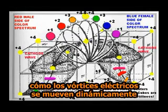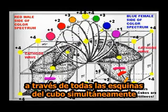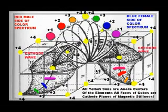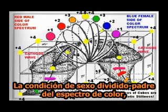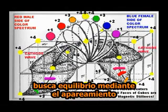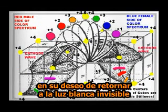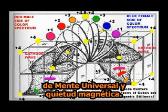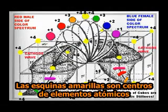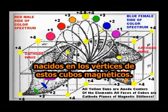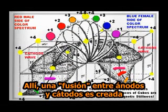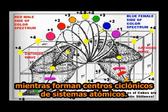This image gives us a view of how the electrical vortices move dynamically through all cube corners simultaneously into their neighboring wave fields. The sex-divided father condition of the red color spectrum is seeking balance by mating with its opposite sex-divided mother condition of the blue color spectrum of electrically simulated lights, in its desire to return to the invisible white light of universal mind and magnetic stillness. The yellow corners are centers of atomic elements born on the vertices of these magnetic cubes, where a fusion between the anodes and cathodes is created as they form cyclonic centers of atomic systems.